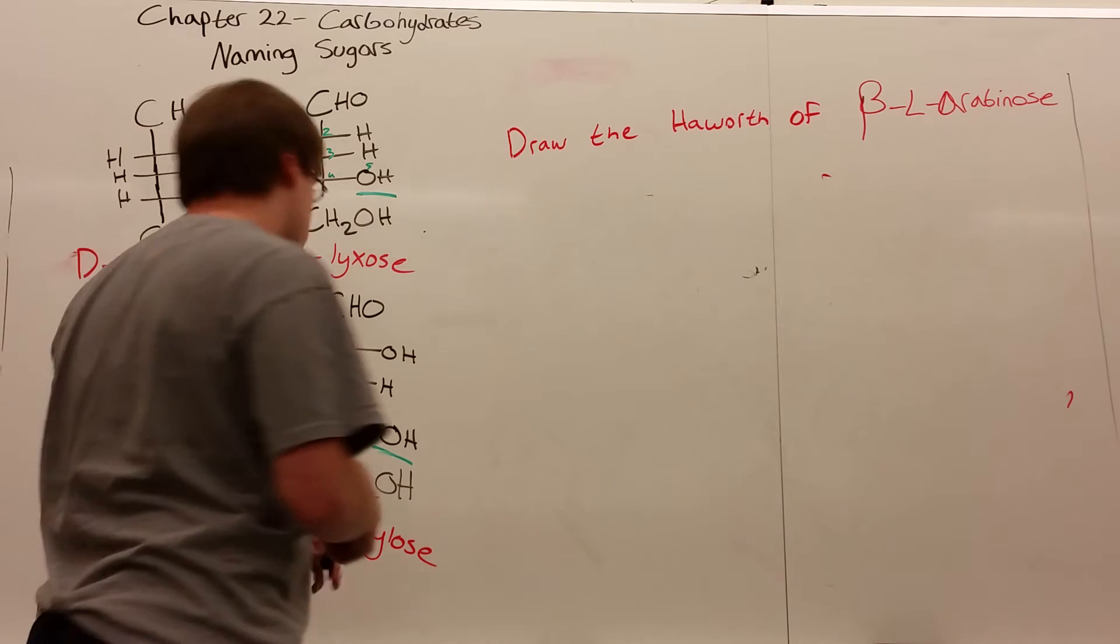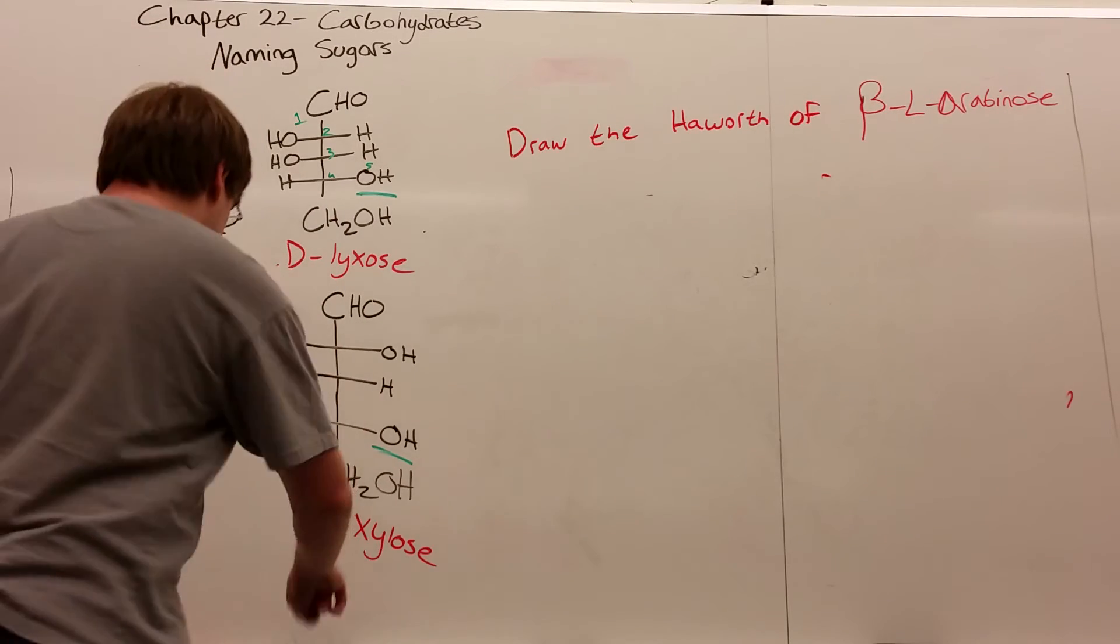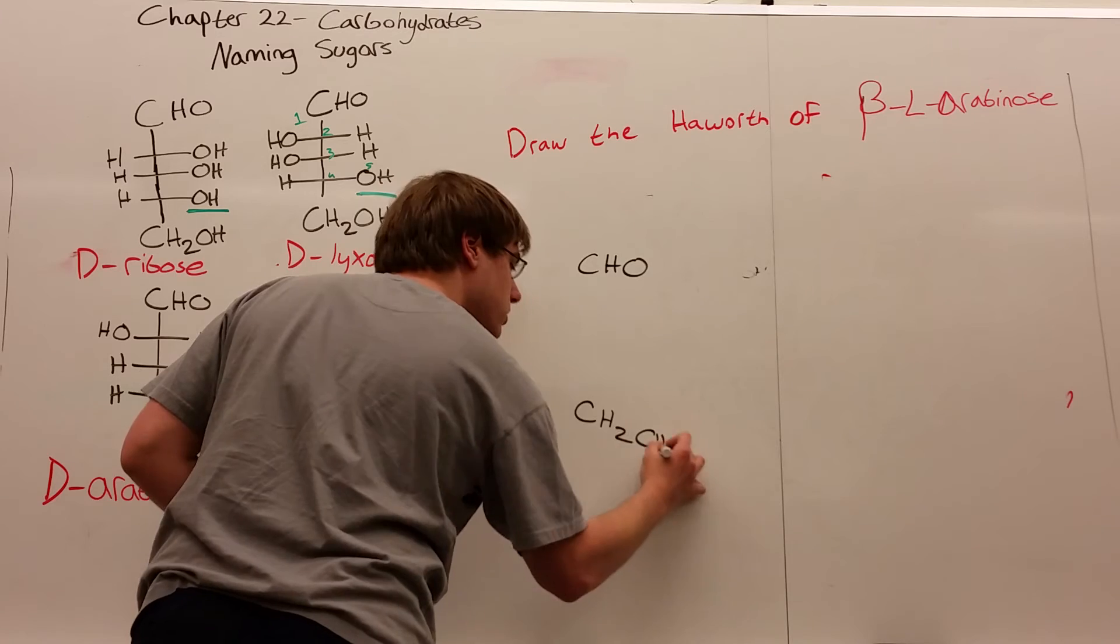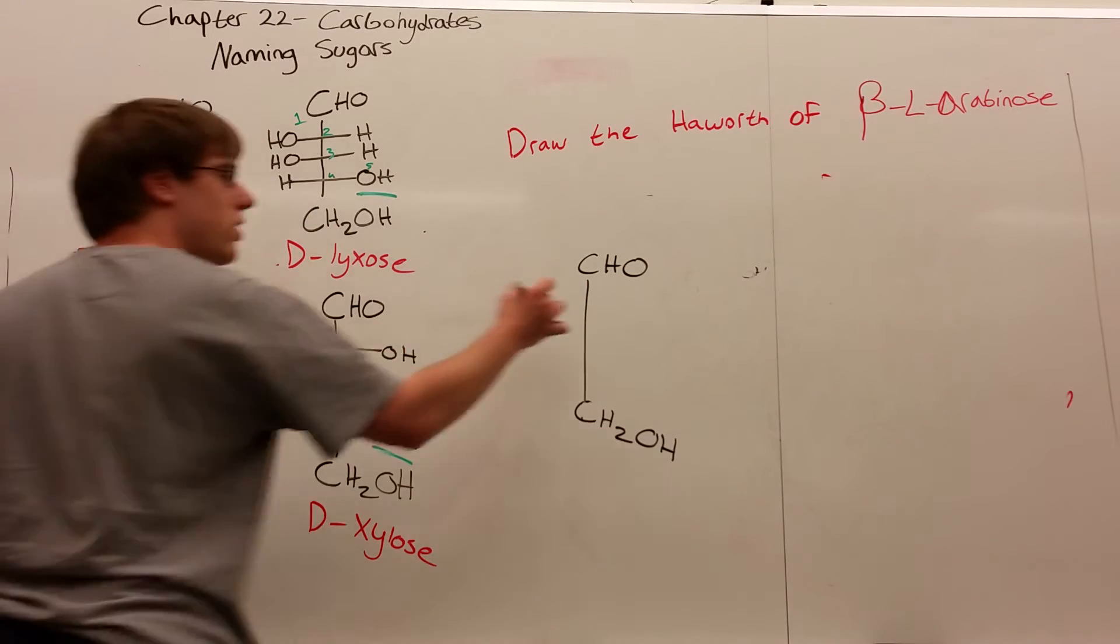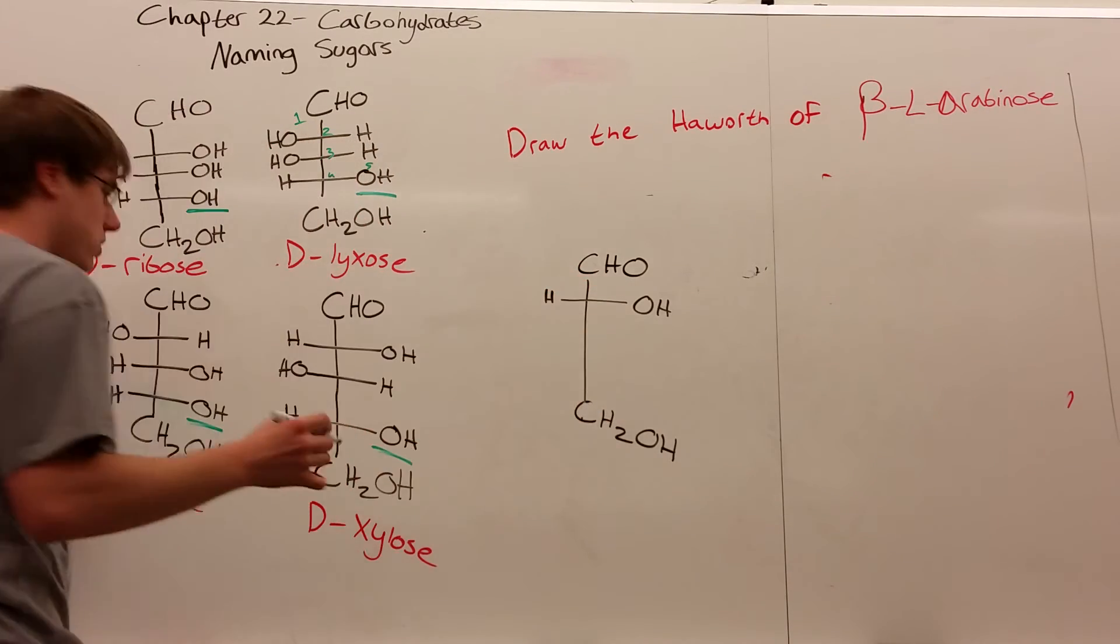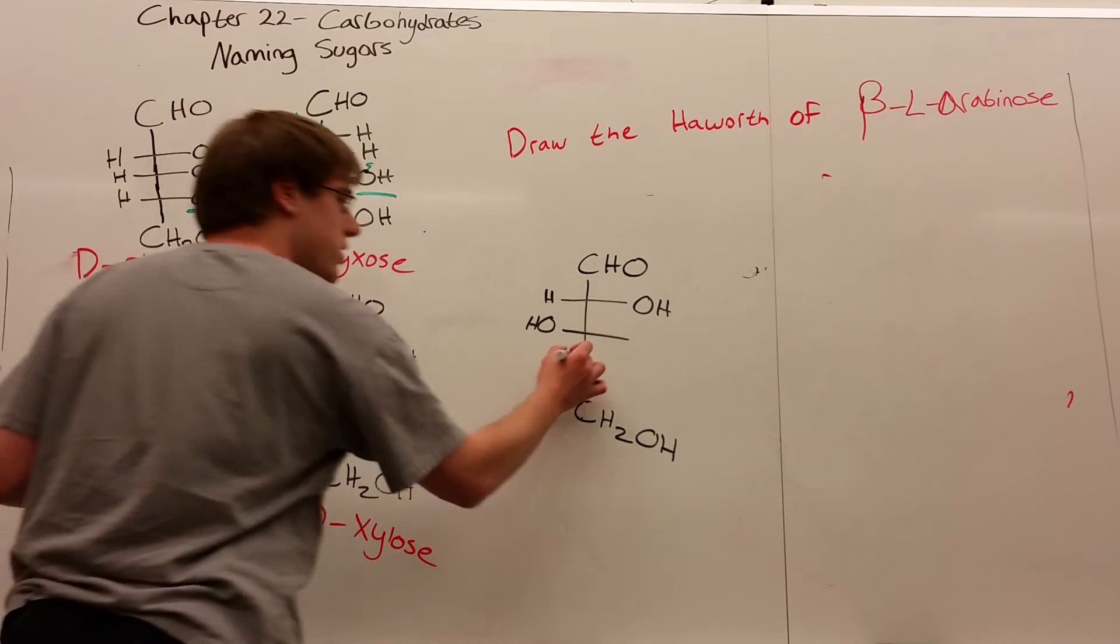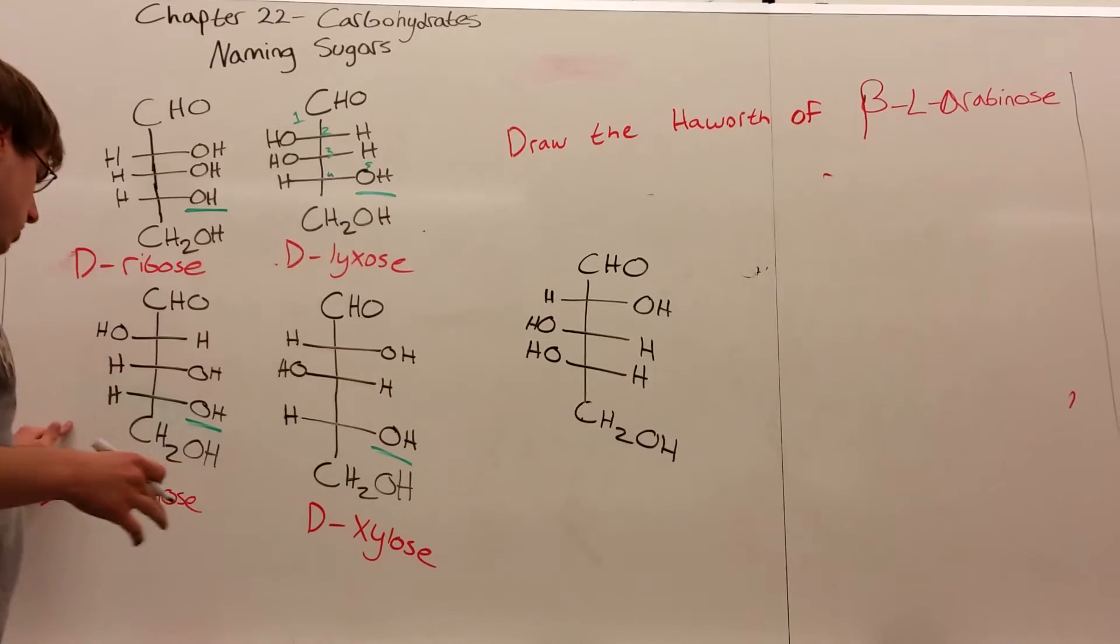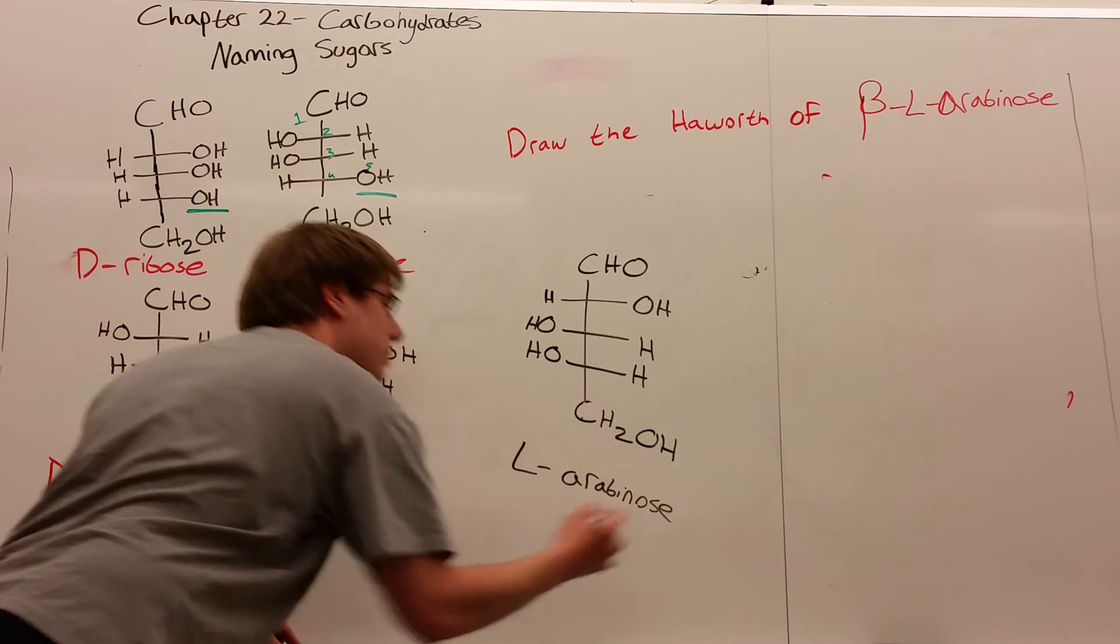If I want to draw L-arabinose in a Fischer projection—and this should be your first step, draw it in Fischer projection—the CHO on top and CH2OH on bottom won't change, but the middle changes. Originally, the OH on carbon 2 was on the left, so now it's on the right. The next OH moves to the left, and the other OH is on the left as well. This is the Fischer projection of L-arabinose, the mirror image of D-arabinose.